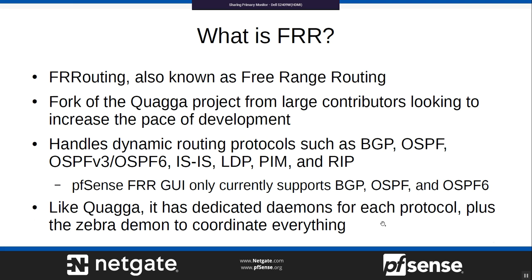FRR is also known as FR Routing or the Free Range Routing project. It is a fork of Quagga — it works very similarly to Quagga. It was forked because large contributors had a backlog of thousands of patches not getting merged into Quagga and wanted to accelerate development. They forked Quagga into FRR, got all that work merged in, and it's been moving quickly. For customers it has been notably more stable than Quagga.